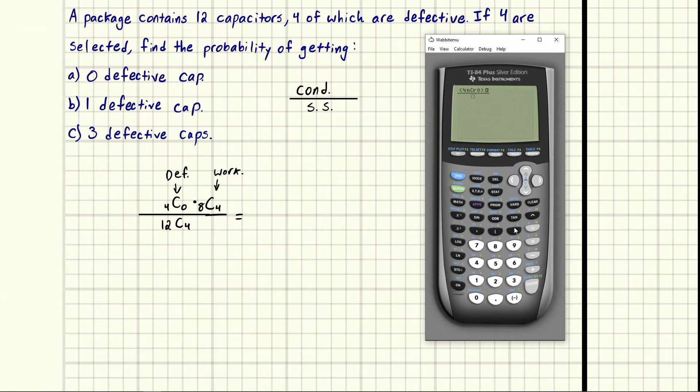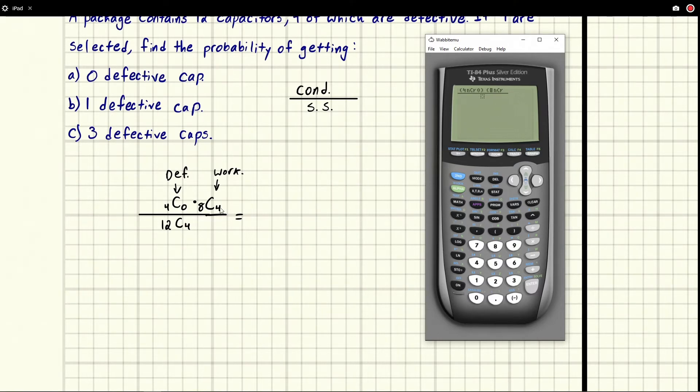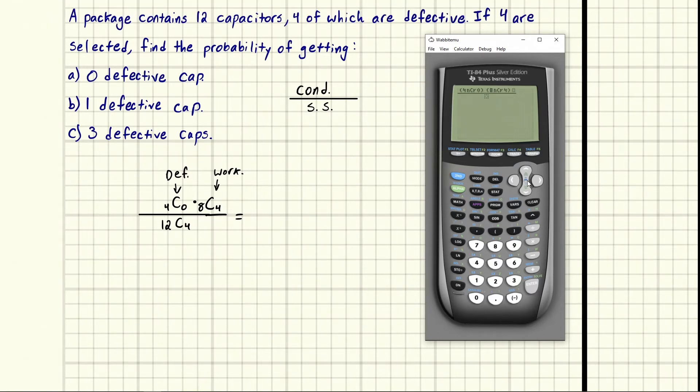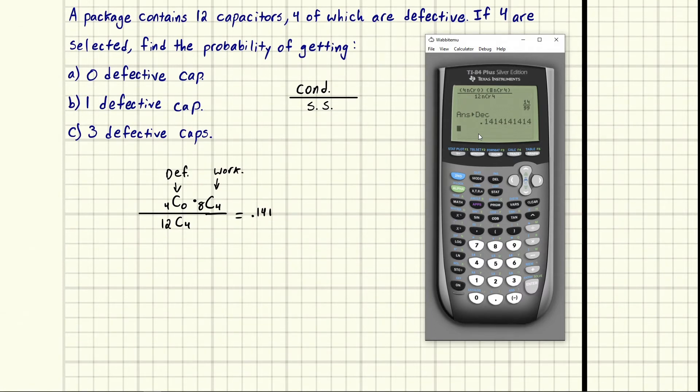So we've got a combination and then we have the number zero. And then we can close parentheses and open a new one because it's multiplied. Remember, then we have eight. And then we go to math probability combination, number three. And then we choose a four. And then on the bottom, we've got a 12 math probability combination number four, the sample space. So we hit enter and we get out a fraction.